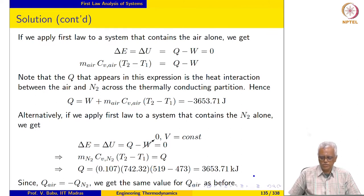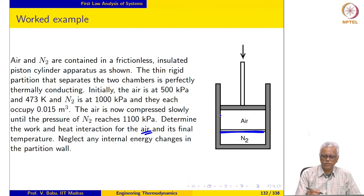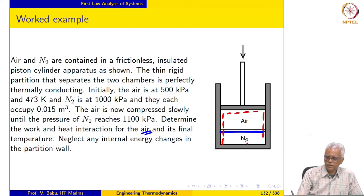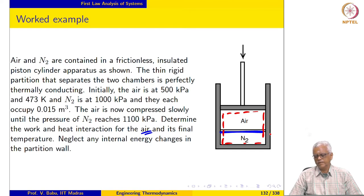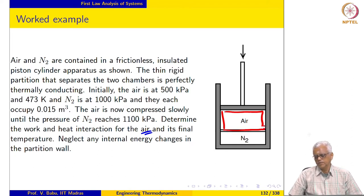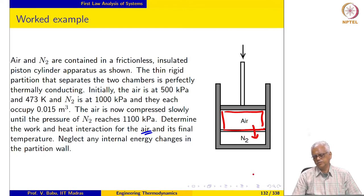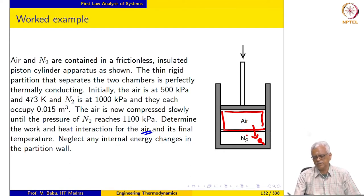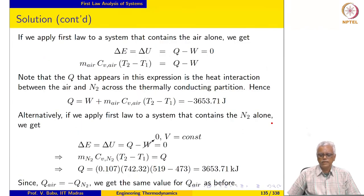If we apply the first law to a system containing air alone, notice that initially we took the system to be air plus nitrogen and calculated the work interaction for the air. Now, taking the air alone as the system and applying first law: there is displacement work for the air and also a heat interaction between air and nitrogen. There is no work interaction across the partition boundary since that part of the system boundary does not deform, but there is a heat interaction between the air and the nitrogen.